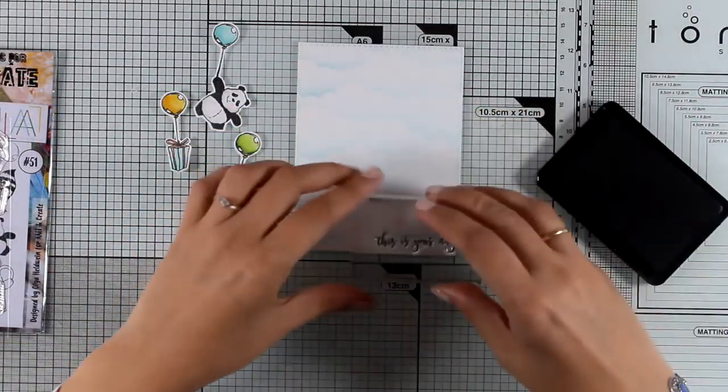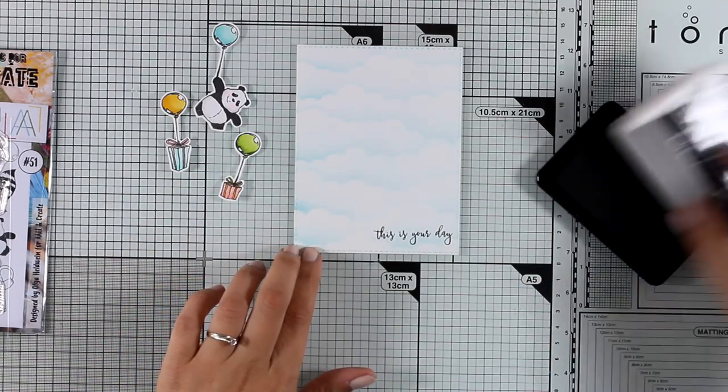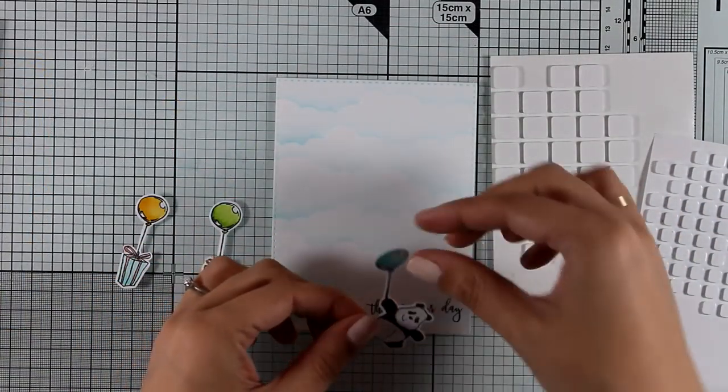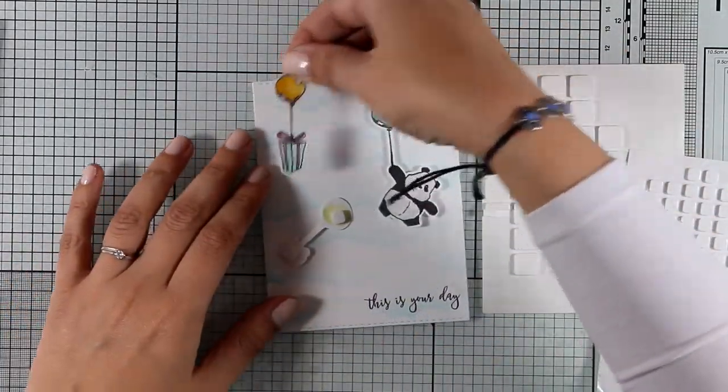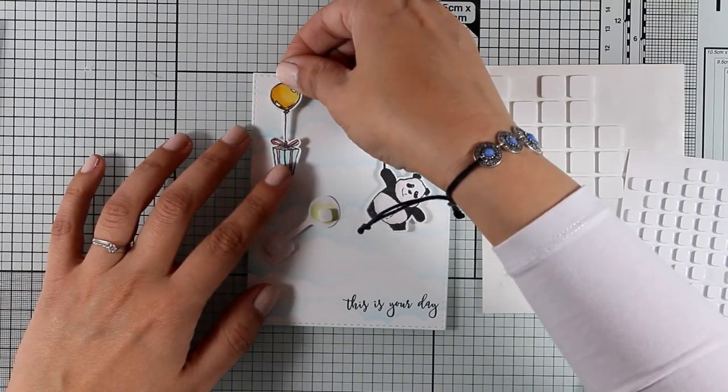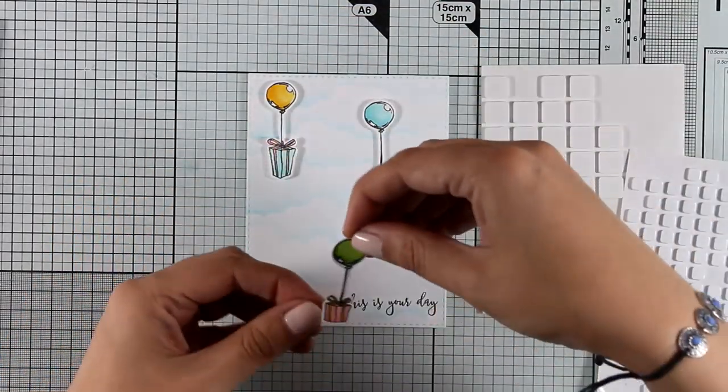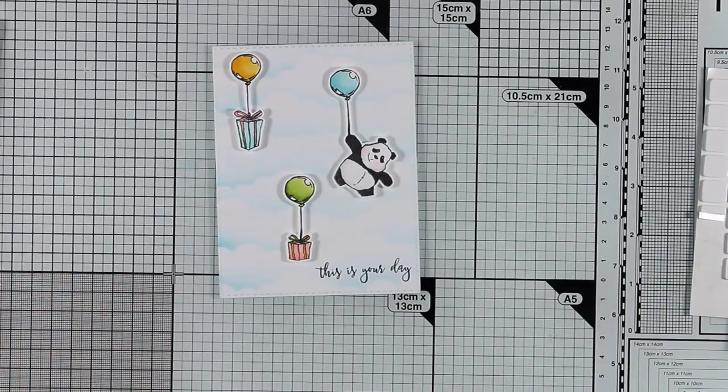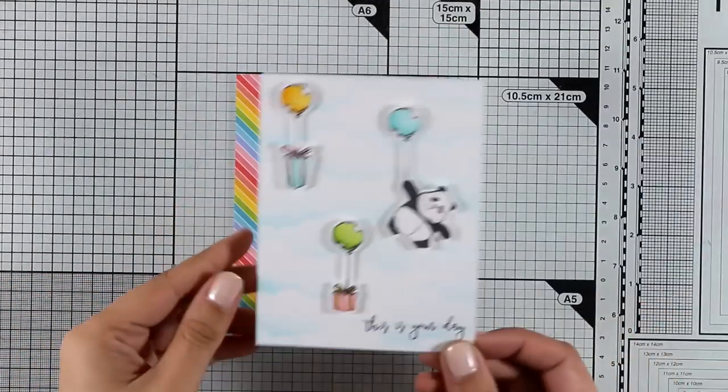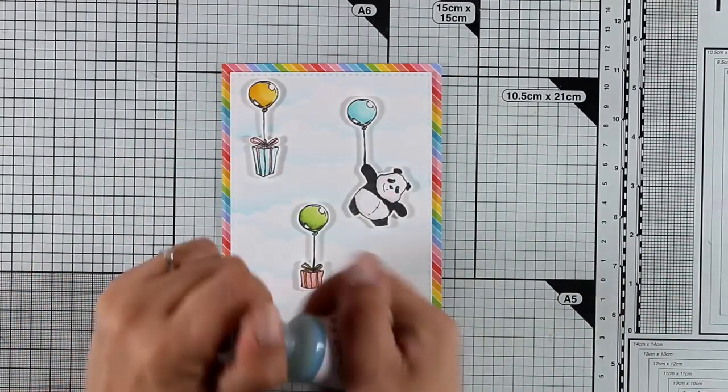And now it's finally time to assemble my card. So first I'm going to stamp the sentiment, this comes from the same stamp set and it says 'this is your day.' And now I will use some foam squares at the back of all those cutouts and stick them on my sky. The only thing you need to remember when you do such a card is to make sure that nothing is aligned, so all of your balloons are in different heights. It really makes it look more interesting if they are not all in the same line.